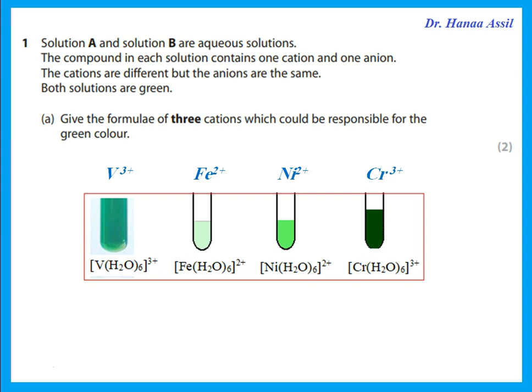Or you could write it with the complex water structure: [V(H₂O)₆]³⁺ and so on. So these are the cations — there are four of them. You could choose any three that give green color.